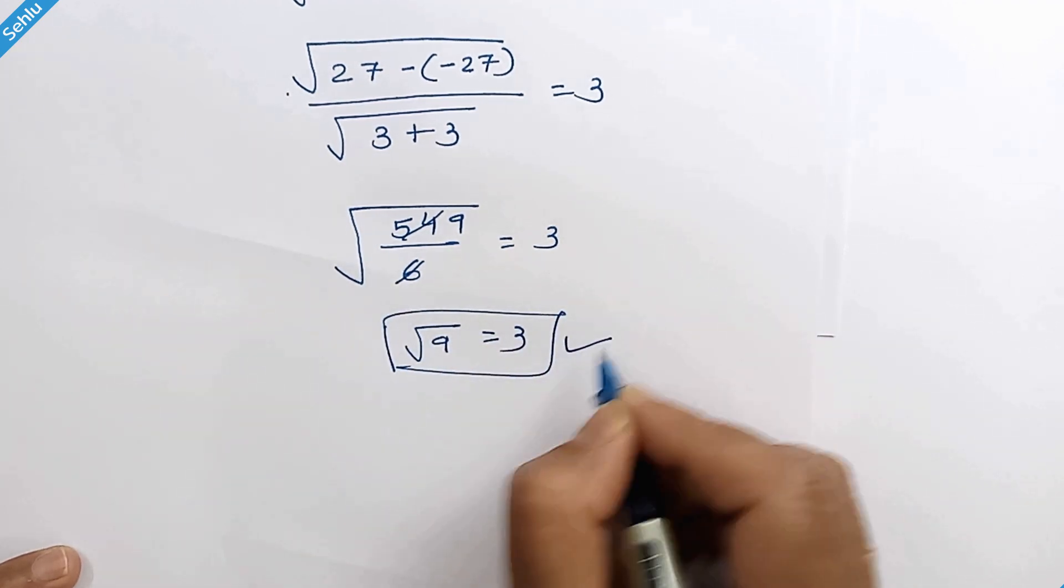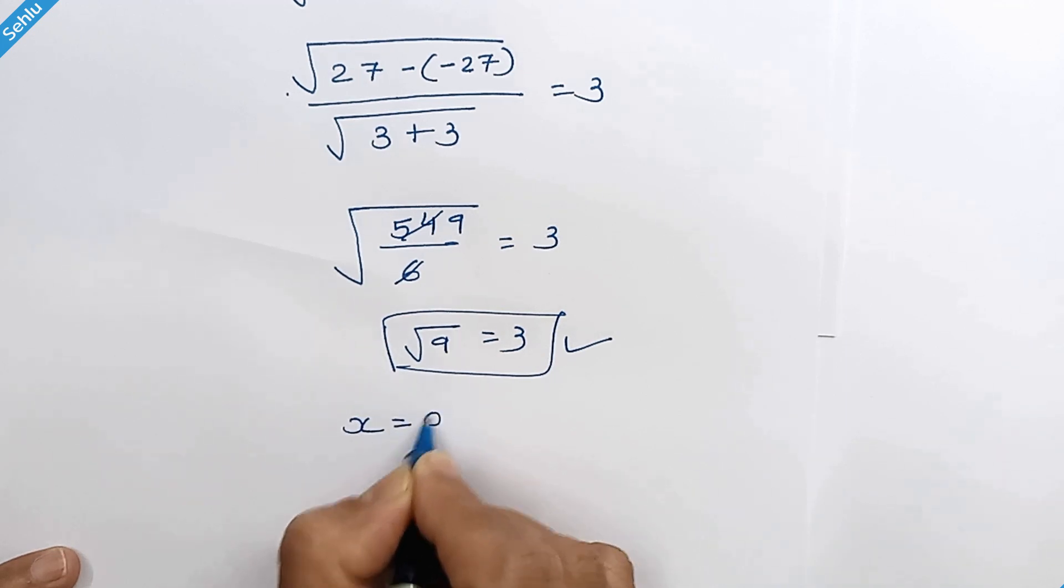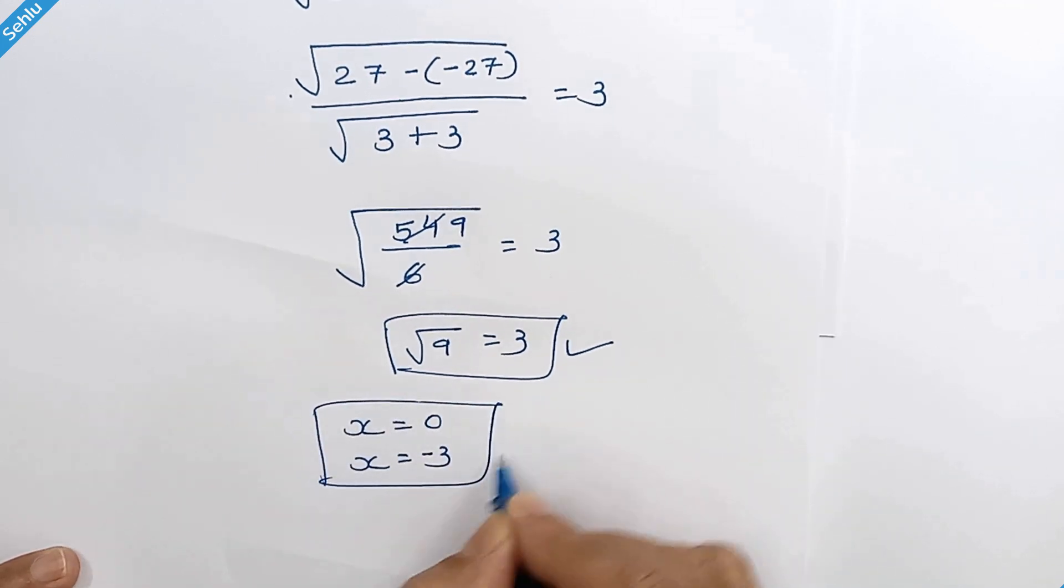So x equals 0 and x equals negative 3 are the correct answers. Thanks for watching. Please subscribe. We will meet in the next one. Bye bye.